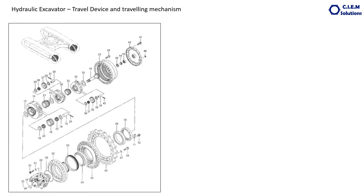Next comes the travel gearbox. This is a planetary reduction gearbox. We discussed the planetary reduction gearbox in the case of the swing device. The travel gearbox is slightly more complex because the swing device gearbox has two stages of planetary reduction with straight reduction in the first and second stages. Here it is a little bit more complex. The principle is the same: reducing the maximum speed and obtaining the maximum torque.